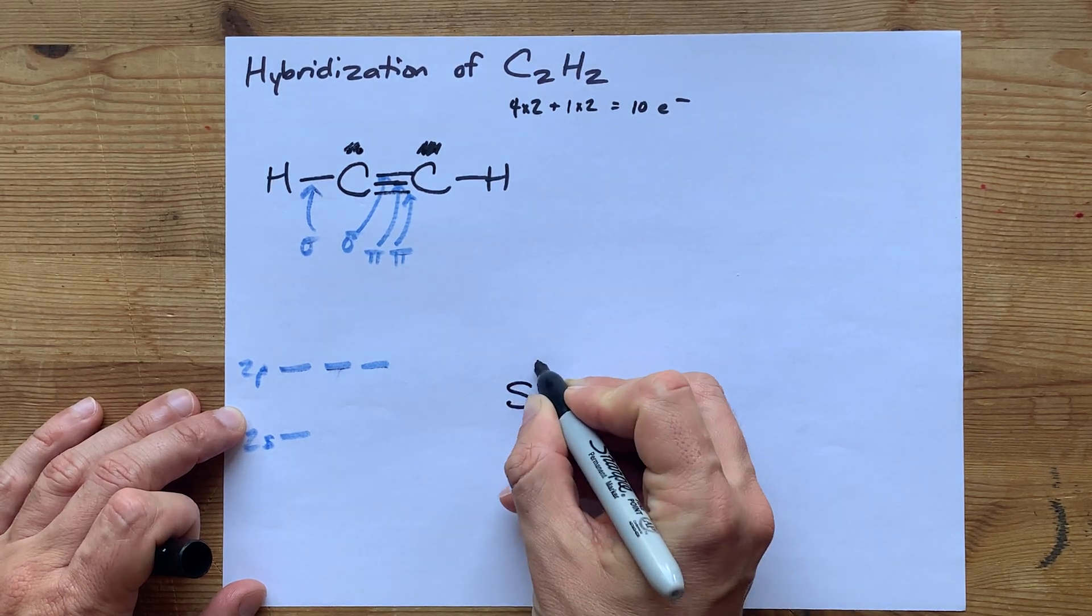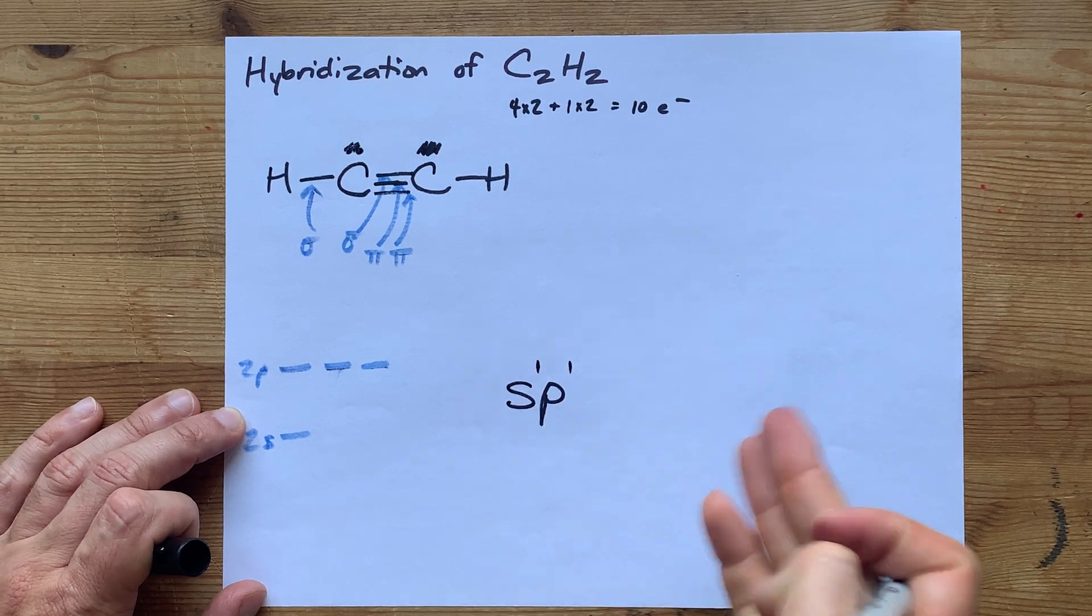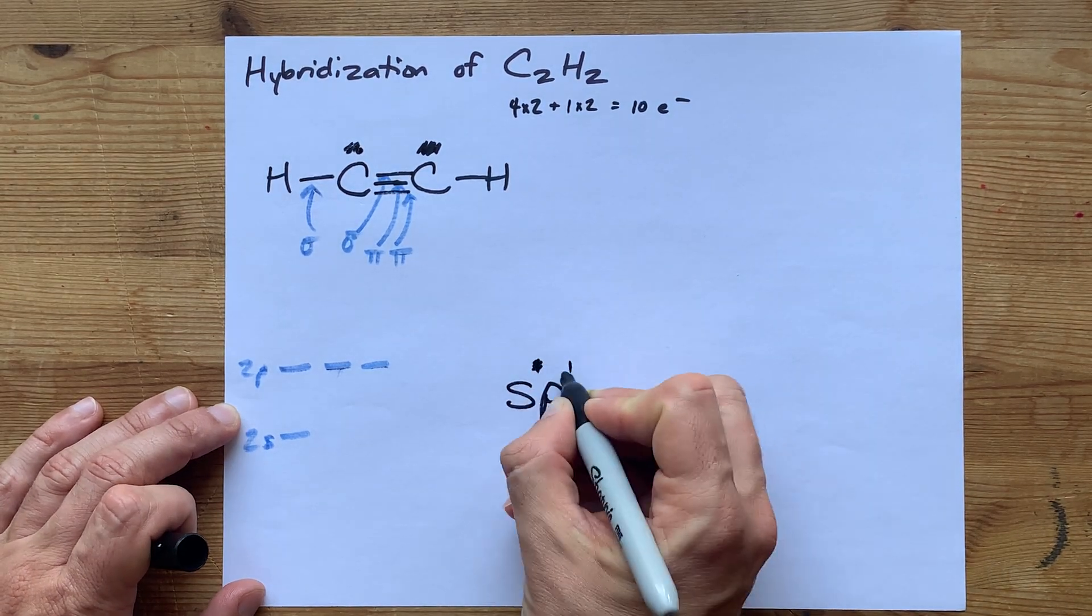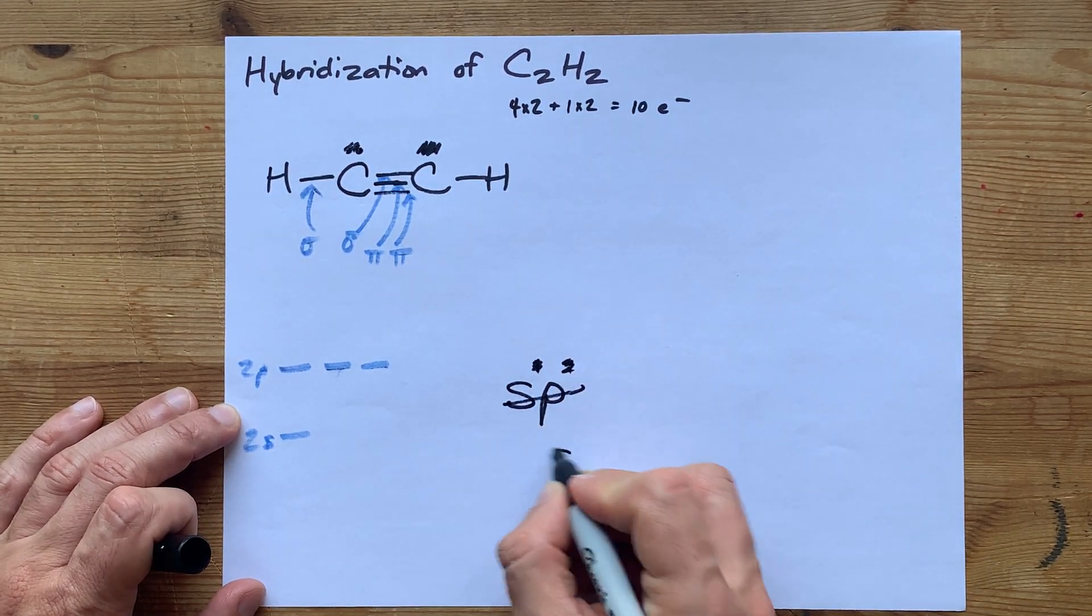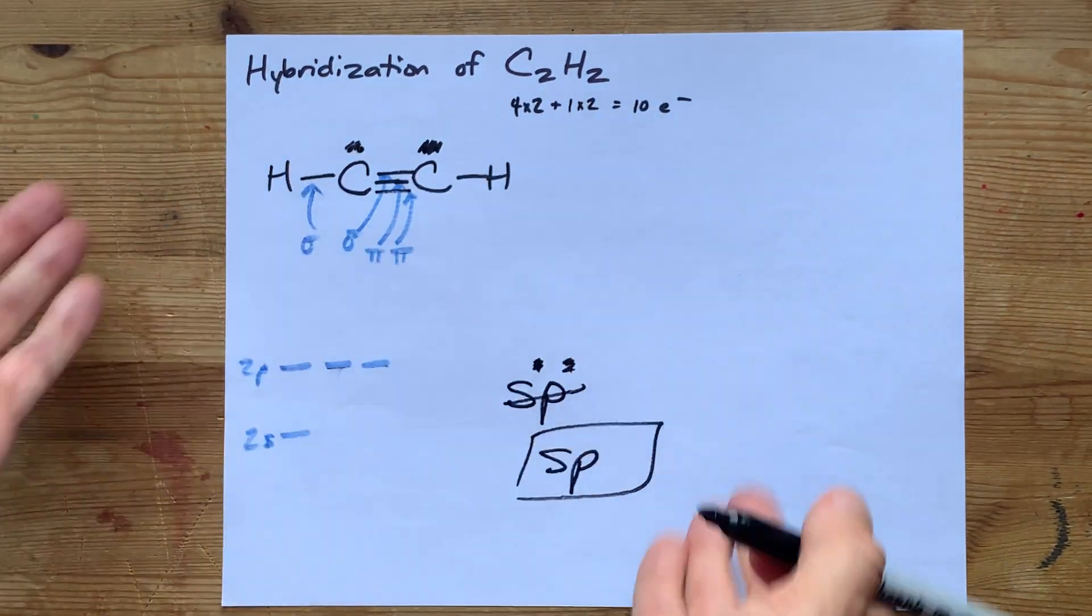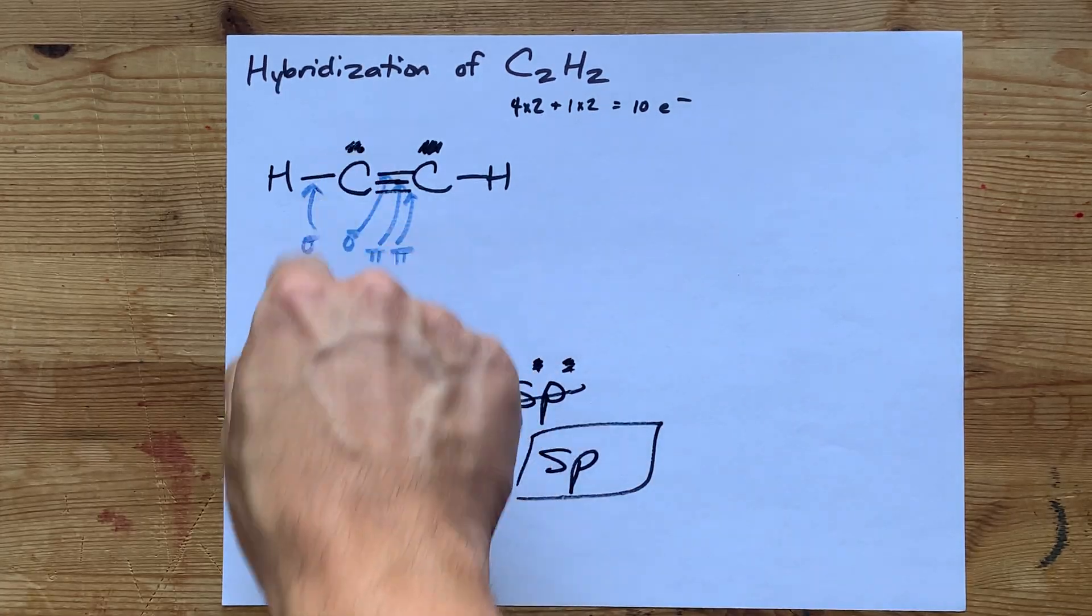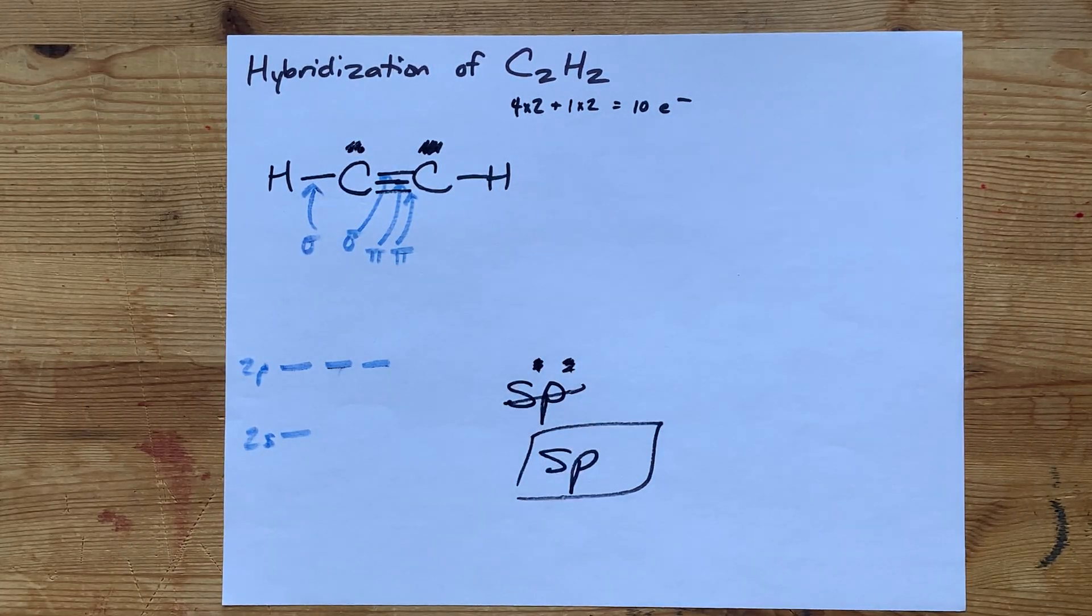Some people might say you should put these exponents, s¹p¹, to show that it's one of each, but exponents of one never mean anything in math, right? All chemists just call it sp hybridization. Both those carbons are sp hybridized, and the reason is there are two pi bonds between the two carbons.